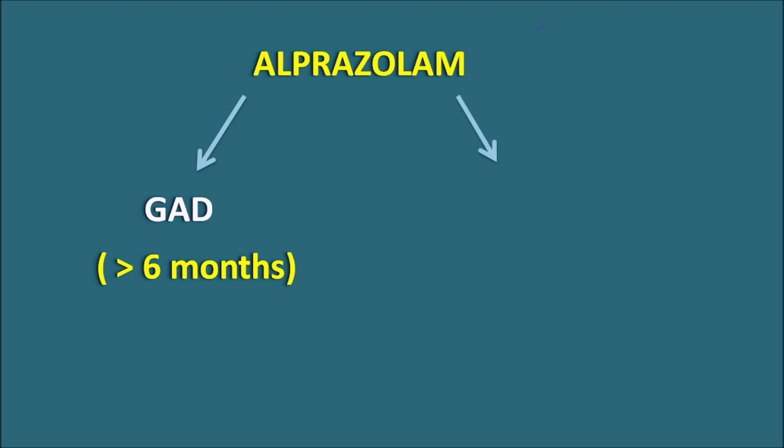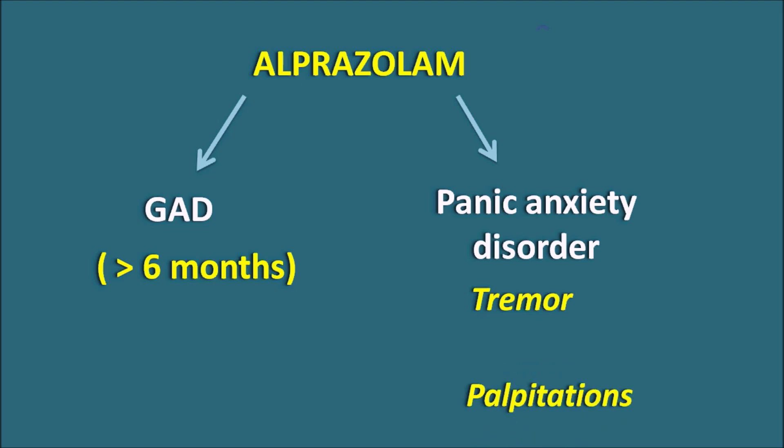Similarly, this drug can also be given in another condition — panic anxiety disorder. This is another type of anxiety disorder associated with panic symptoms like tremor, palpitations, tachycardia, and sweating. All these represent an increase in the autonomic response in patients. So in such conditions, Alprazolam can again be used.